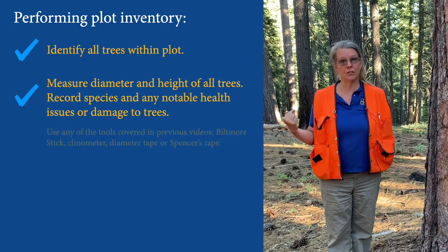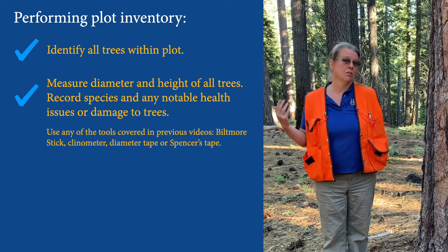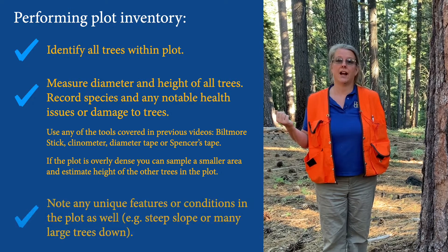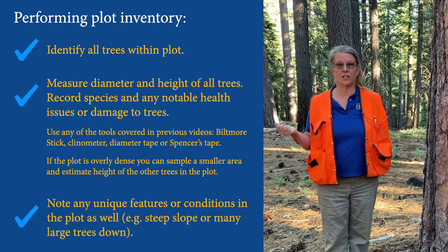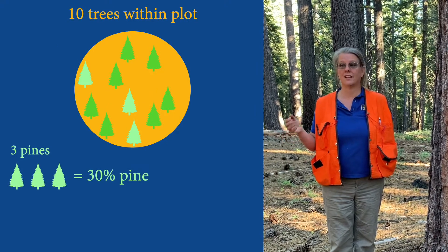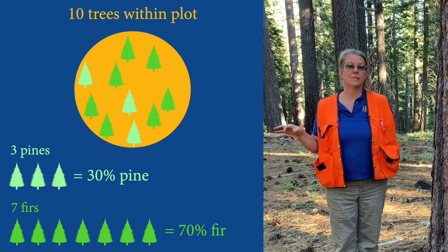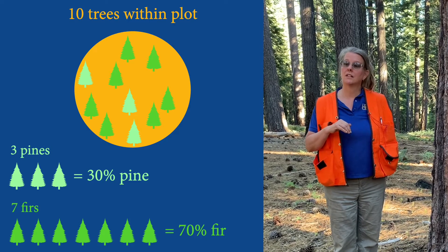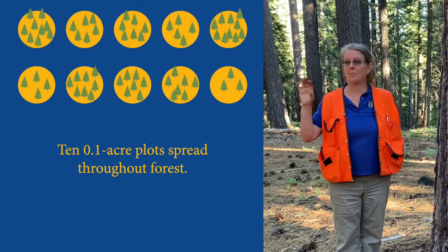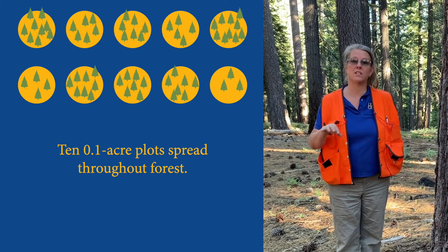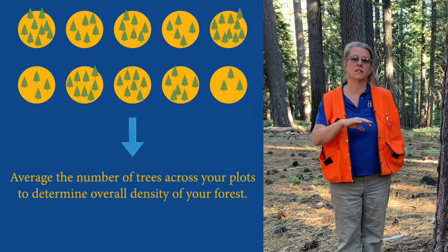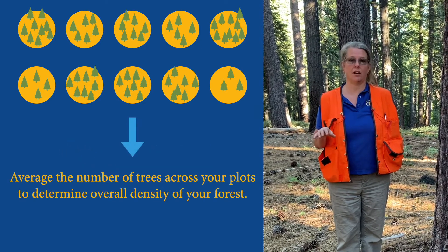I've just finished identifying all the trees in my tenth-acre plot. I've taken the diameter of each one and the height of most of them — I can sample if there are too many. I found that I had 10 trees in my tenth-acre plot: three pines and seven firs. That's only one plot. Since I'm sampling, I want to do a bunch more. Say I put in 10 plots across my landscape — that means I've done 10 one-tenth-acre plots.